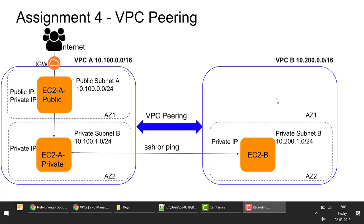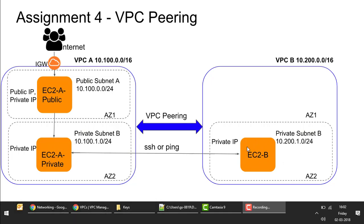In this assignment we are going to look at VPC peering. As explained in the lecture, if you do VPC peering, the instances in the private subnets from two VPCs can talk to each other over private IPs. This is typically required for security purposes — if you don't want to allow public access to instances inside a VPC but still want to connect to that VPC. In VPC B there is no internet gateway and no public subnet.